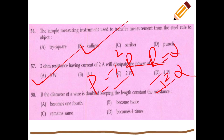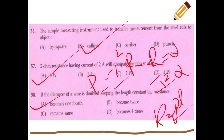If the diameter of a wire is doubled while keeping the length constant, the resistance becomes one-fourth of its original value, using the formula R = ρL/A.